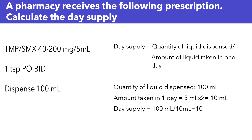So how do we calculate the day supply? The day supply is the quantity of liquid dispensed divided by the amount of liquid taken in one day. Here, what is the quantity of liquid being dispensed? It's 100 ml.